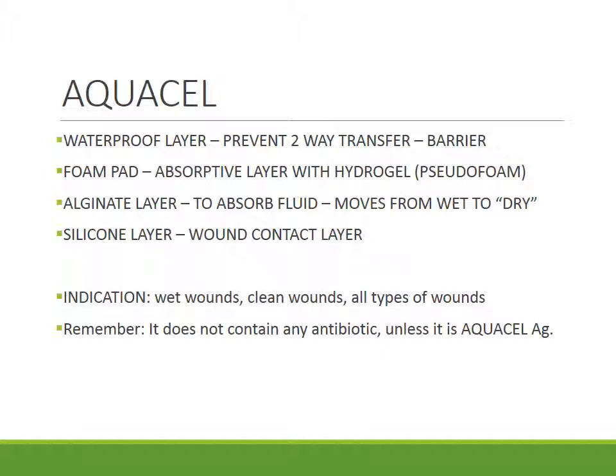The foam pad is a pseudo-foam which has hydrogel interspersed inside it — the foam maintains capillary action and the hydrogel uses a liquid-lock principle to lock fluid inside it. The alginate layer absorbs fluids very fast, maintaining a moist wound environment. The silicone layer is the wound contact layer, so if you're putting Aquacill over periosteum, tendon, or bone, you don't need any extra layer as the silicone prevents adherence. You can use this in wet wounds, clean wounds, and all kinds of wounds. Remember Aquacill doesn't contain any antibiotic or antiseptic, unless it is Aquacill AG which has silver.